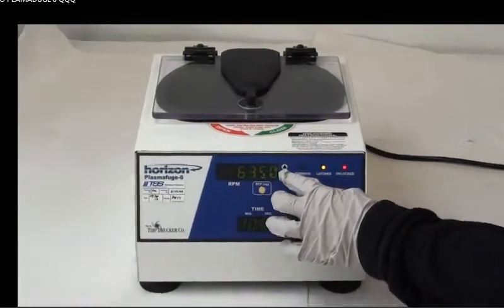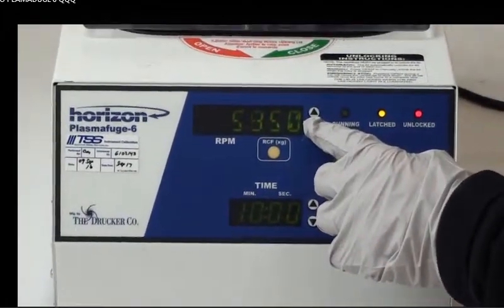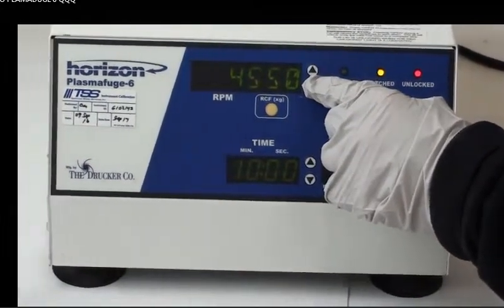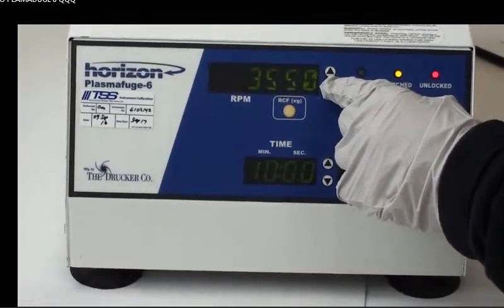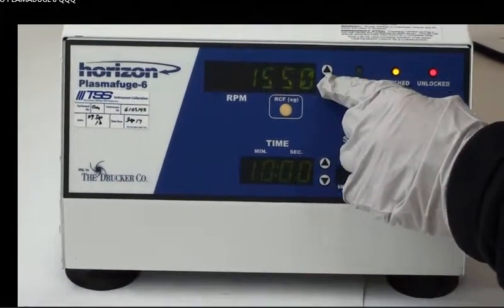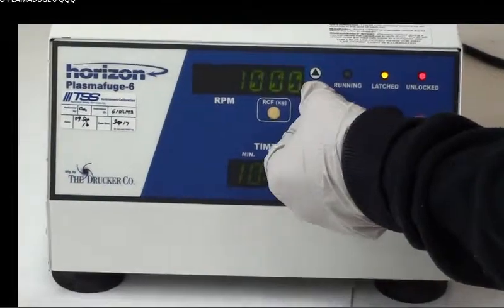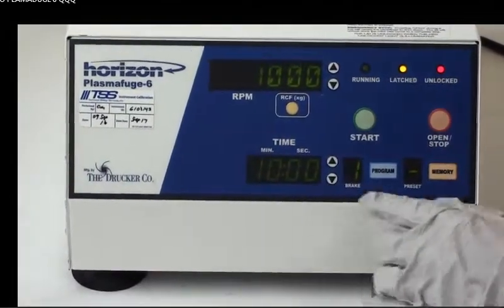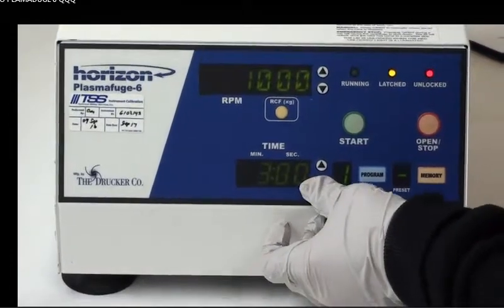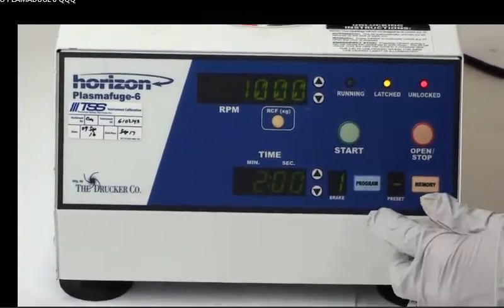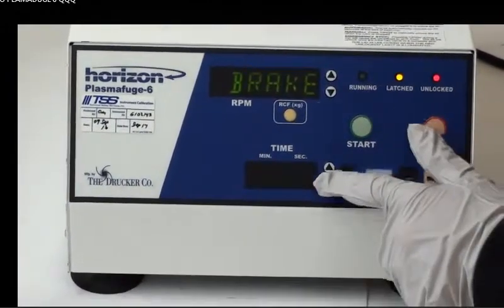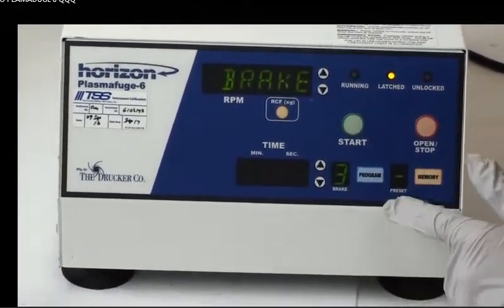Let's say we wanted to go down to a thousand RPM. All you need to do is press this down arrow next to the RPM bar, so we're at a thousand. We can also adjust the time. I'll change it to two minutes exactly, and then if you go into program you can change the brake. You can make it go higher or lower.